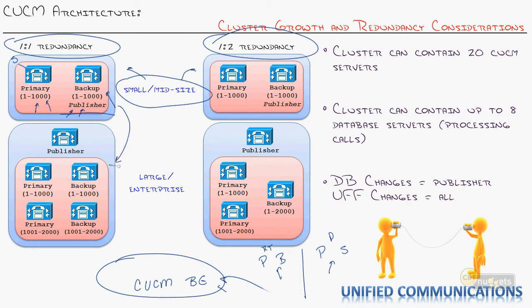In the large or enterprise-sized environment, notice what happens: the publisher is pulled out of the call processing world entirely. The shaded servers here represent those supporting phones — all subscribers. The publisher is present but not part of the call processing circle, because it's too valuable to handle call load. It just handles the one read-write copy of the database. So you have one subscriber as primary for phones 1 to 1,000, and one subscriber sitting as a backup. Then another subscriber as primary for phones 1,001 through 2,000, with its own backup. That's the one-to-one model for a 2,000-phone network.